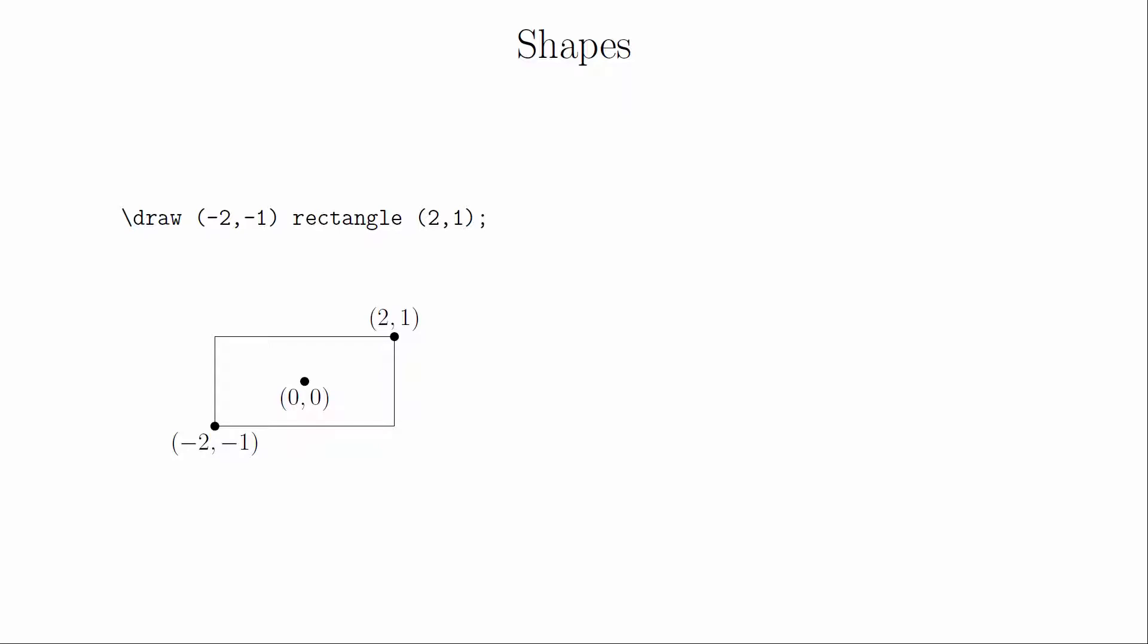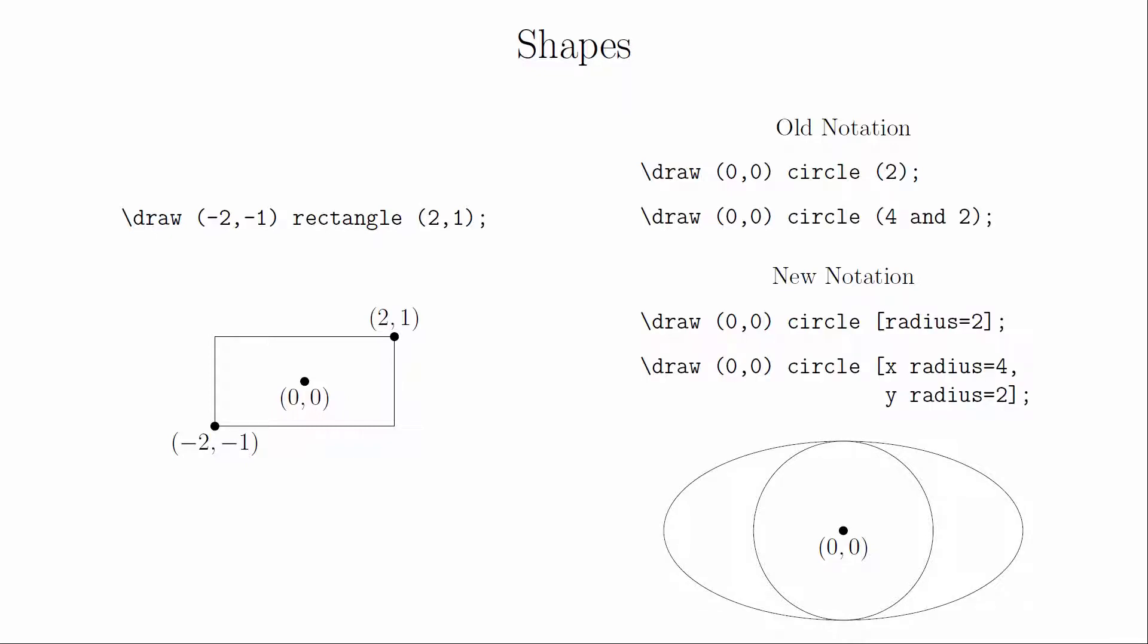We can also draw circles and ellipses. Unfortunately, there are two notations that you're going to see out there. The old notation is probably still the most common, but I would steer you towards the newer notation because it's easier to understand even though it's more typing. However, both notations will be shown so that you can become familiar with both. Here are the two circle commands. The point refers to the center, and the radius is the other part. To make an ellipse, you have to specify the measurements of both the horizontal and vertical axes. Notice that the old notation uses round parentheses, but the new notation uses square brackets.